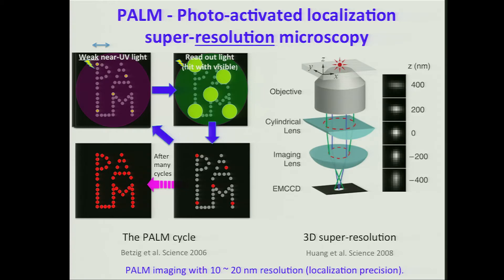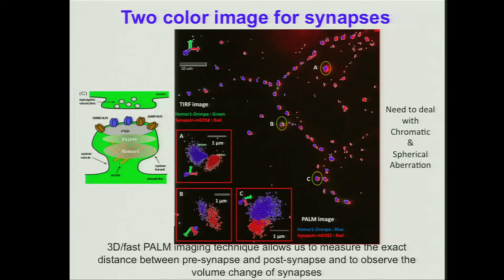If you want to do three dimensions, you use an aspheric lens in front of the detector, which gives you Z resolution fairly easily. What we've done is actually implemented this: here in blue are nerves, and in red that's the pre-synaptic and post-synaptic regions. Occasionally we can actually see the distance between them, because we have enough resolution to resolve the synapse.